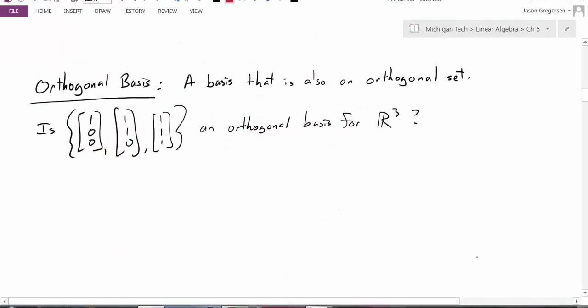So an orthogonal basis is a basis that is also an orthogonal set. The definition is pretty straightforward, so let's do a quick application. Is this set of vectors an orthogonal basis for R3?